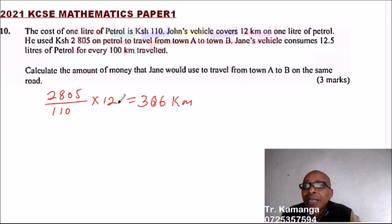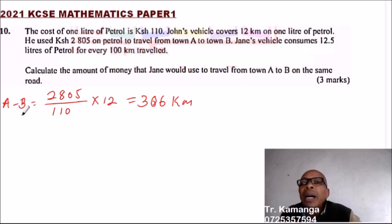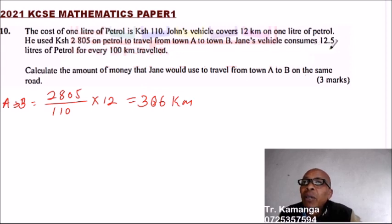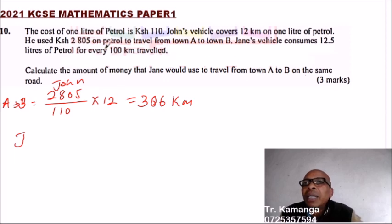So the distance from A to B is 306 kilometers. Now that we know the number of kilometers, we move on to Jane's calculation. Jane's vehicle consumes 12.5 liters of petrol for every 100 kilometers.